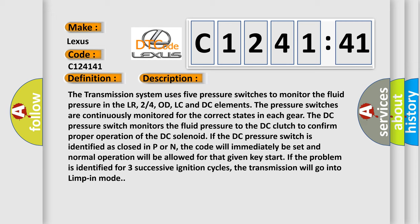And now this is a short description of this DTC code. The transmission system uses five pressure switches to monitor the fluid pressure in the LR, 2/4 OD, LC, and DC elements. The pressure switches are continuously monitored for the correct states in each gear. The DC pressure switch monitors the fluid pressure to the DC clutch to confirm proper operation of the DC solenoid.